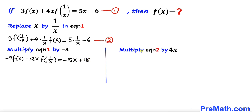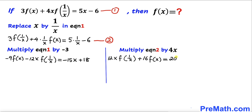And we are going to multiply equation 2 by 4x on both sides. So 3 times 4x gives us 12x times f of 1 over x, and 4 times 4 gives positive 16, with x and 1 over x cancelling each other out, leaving f of x. On the right hand side, 5 times 4 is 20 with x and 1 over x cancelling, minus 24x.